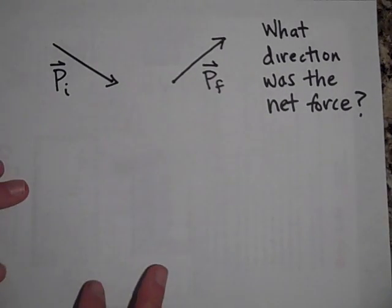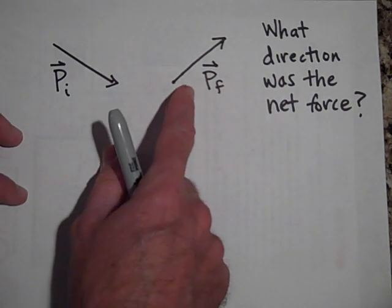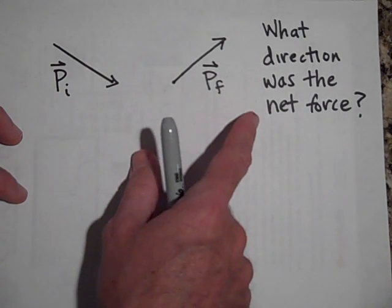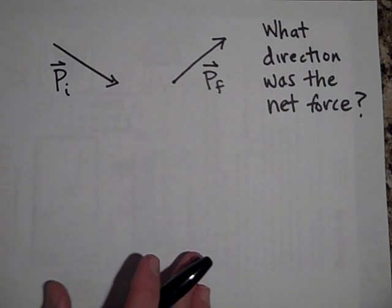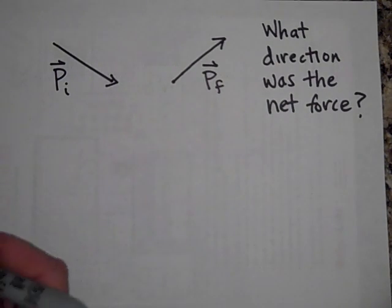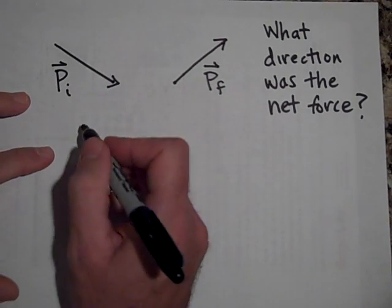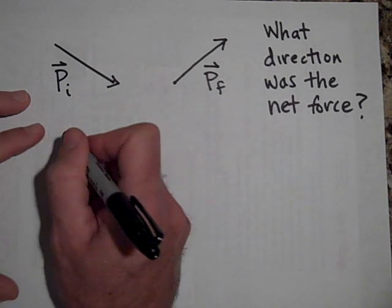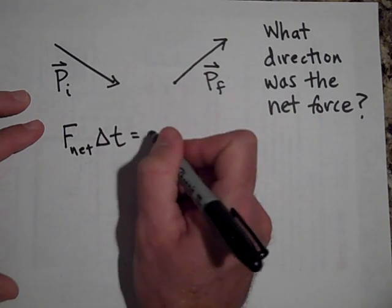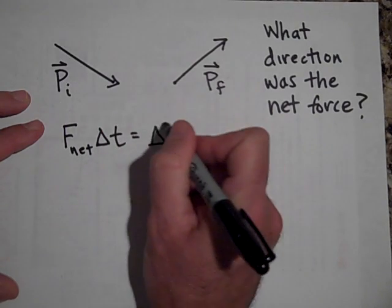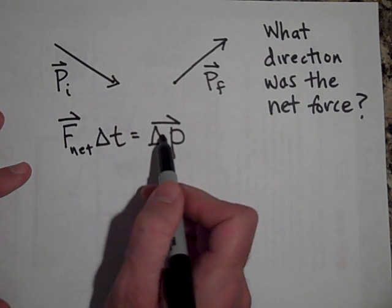Next one: if an object has a momentum initially going this way and then a little later has a momentum going this way, what is the direction of the average net force on this object? Go ahead and pause. Okay — F net times delta t equals delta p, so F net is in the same direction as delta p.